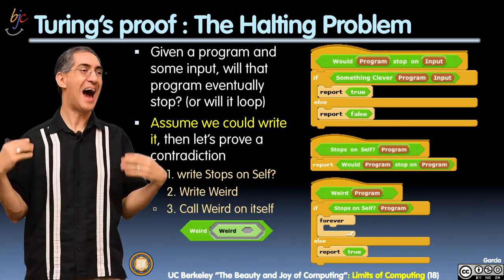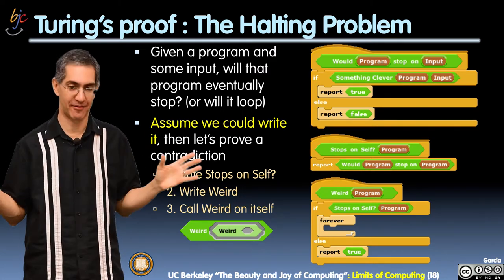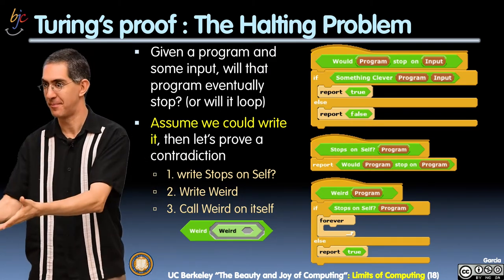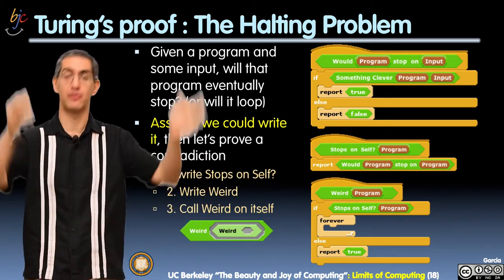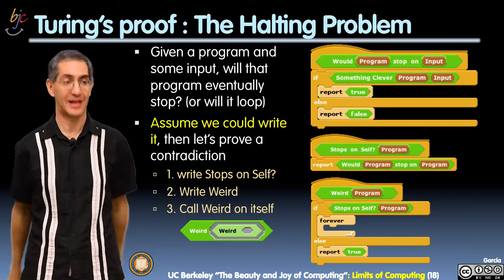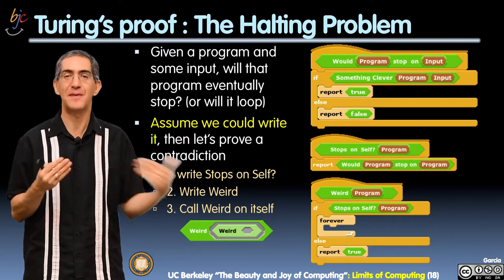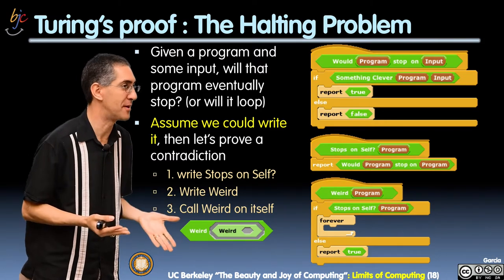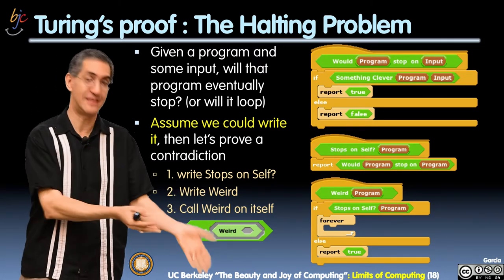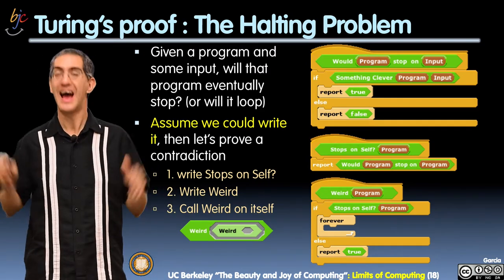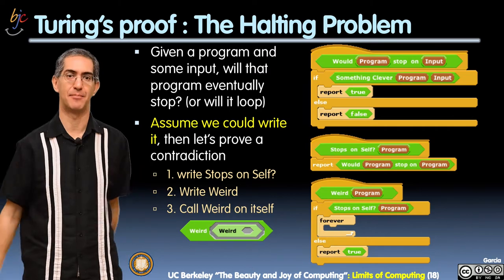Now here's the cool part. I don't know how to do it, but I'm going to call a helper called 'something clever.' Something clever is going to do all the work for me. If something clever says true, it means the program would stop on data — I return true. If something clever says false, I return false. So something clever is really the one doing the work. I really should just report something clever, but this makes it more explicit. I assume something clever is authorable — someone could write that.